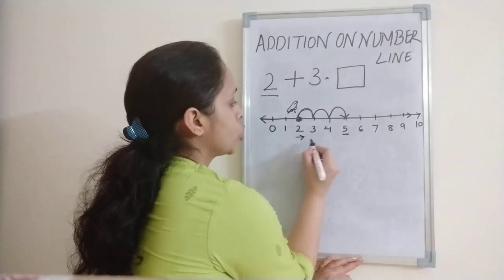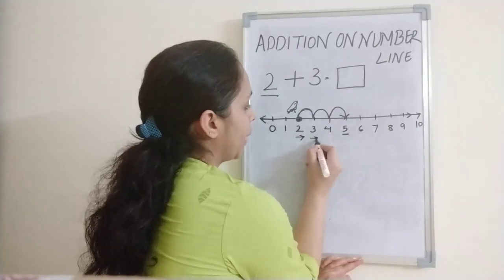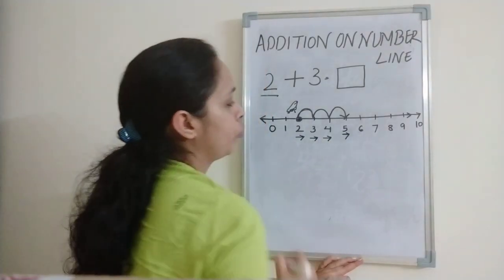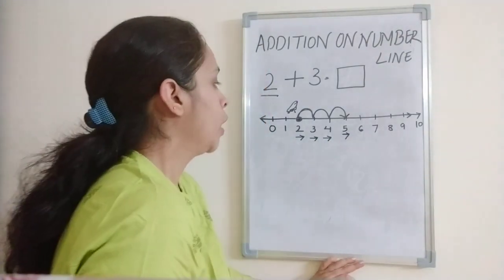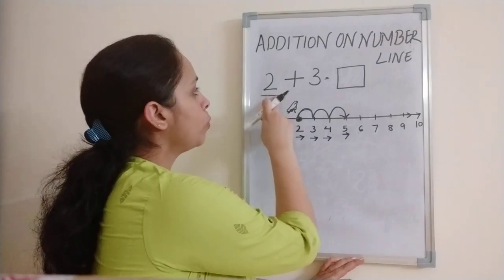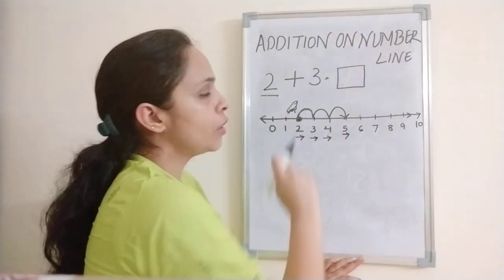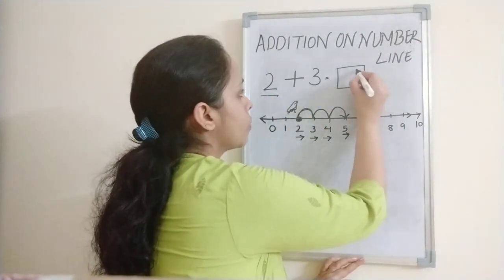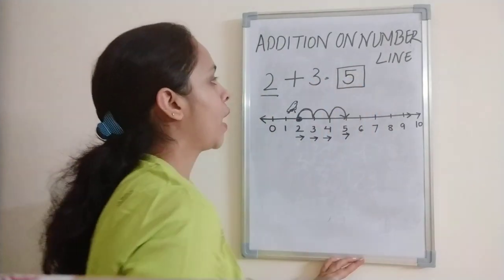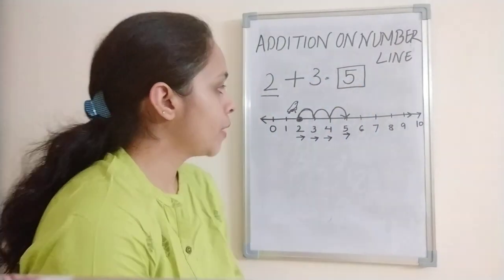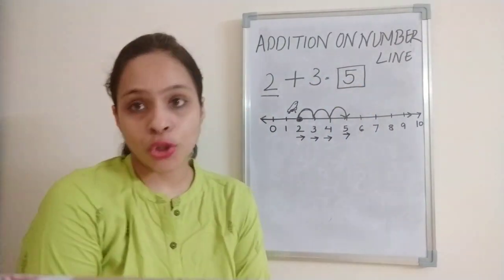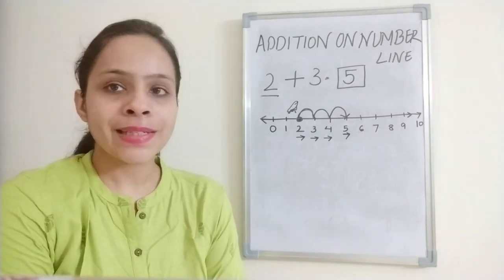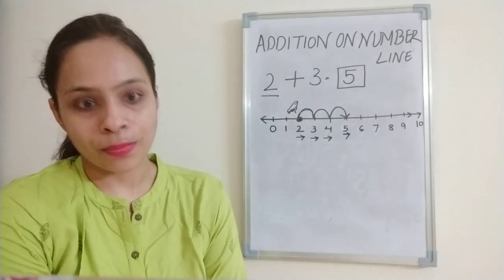The frog started from number two, then one step to three, then to four, and then to five. So when we added two plus three, what is the answer? The answer is five. This is the way we do addition on a number line. Let's take this further with one more example.